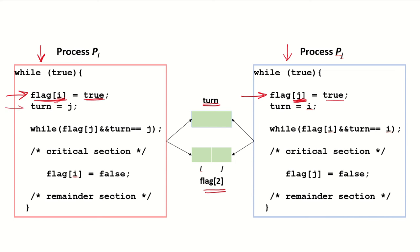Process PI then assigns a value of j to turn, meaning it is allowing the other process to enter the critical section. So though PI wants to enter — indicated by flag[i] being true — it assigns j to turn, giving a chance to PJ. Similarly, PJ assigns a value of i to turn, allowing process PI to enter. So both processes are courteously allowing the other process to enter the critical section.